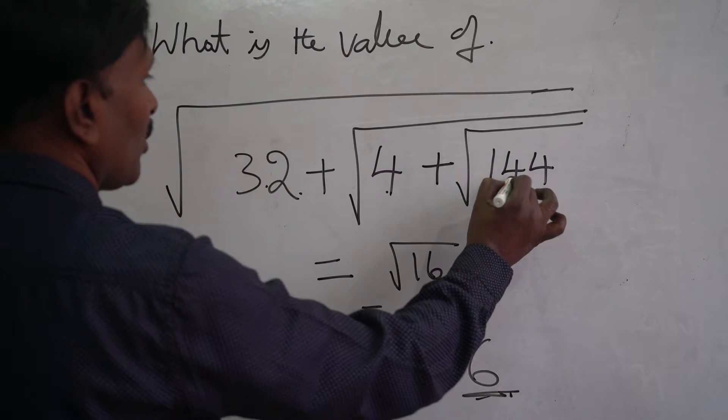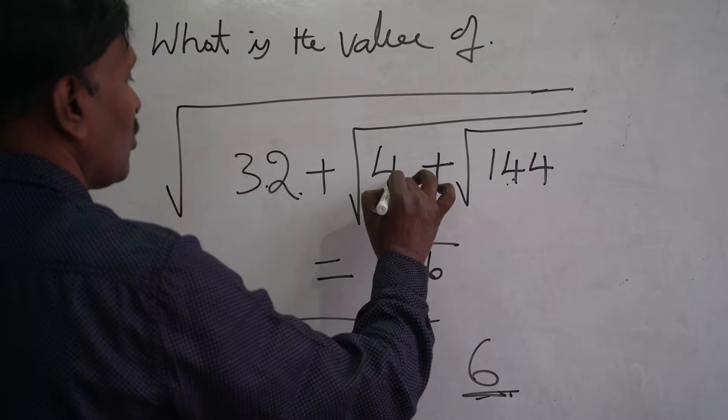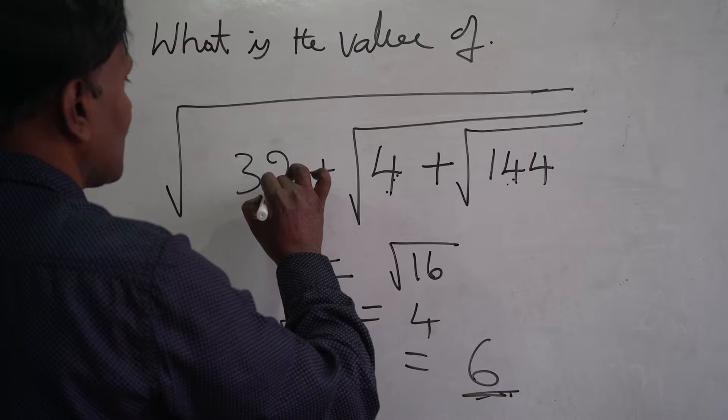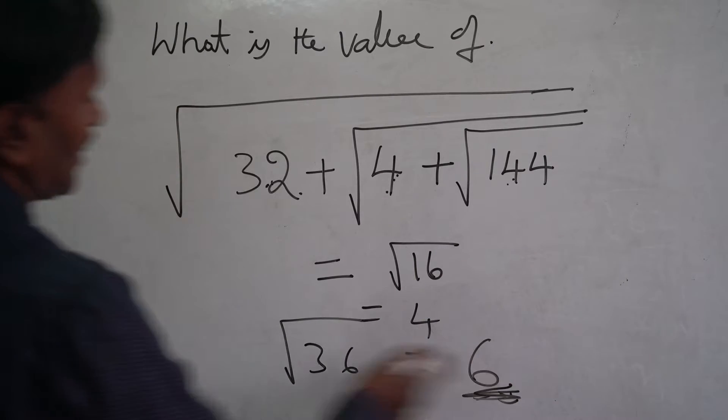See, square root of 144 is 12. 12 plus 4 is 16. Square root of 16 is 4. 4 plus 32 is 36. Square root of 36 is 6, right?